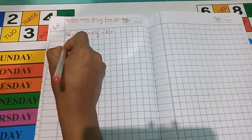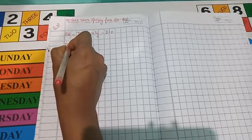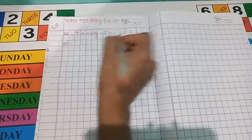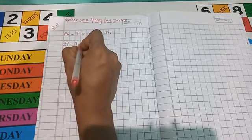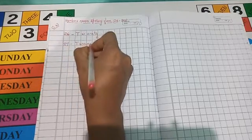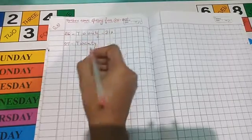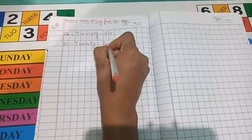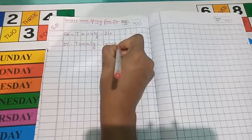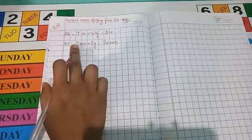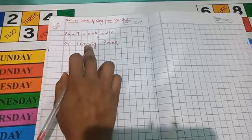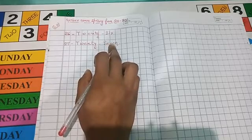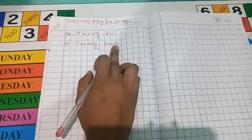Next number is after 26, which number comes? 27. The spelling of 27 is T-W-E-N-T-Y, 27, S-E-V-E-N, 27. T-W-E-N-T-Y, 27, S-E-V-E-N, 27.